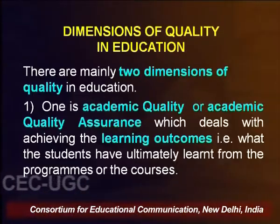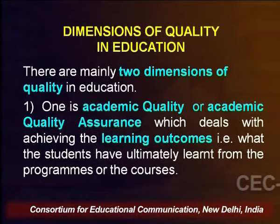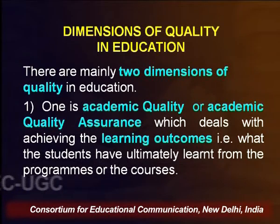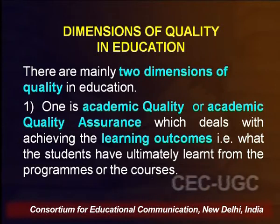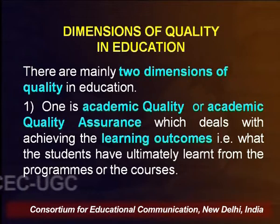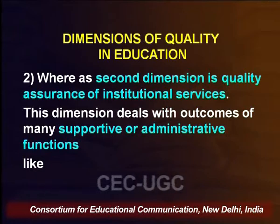Today we will be talking on various dimensions of quality in education. Basically, there are two dimensions of quality in education. The first is academic quality assurance, which deals with achieving the learning outcomes — that is, what the students have ultimately learned from the programs or courses, and whether those learning outcomes are good and applied.